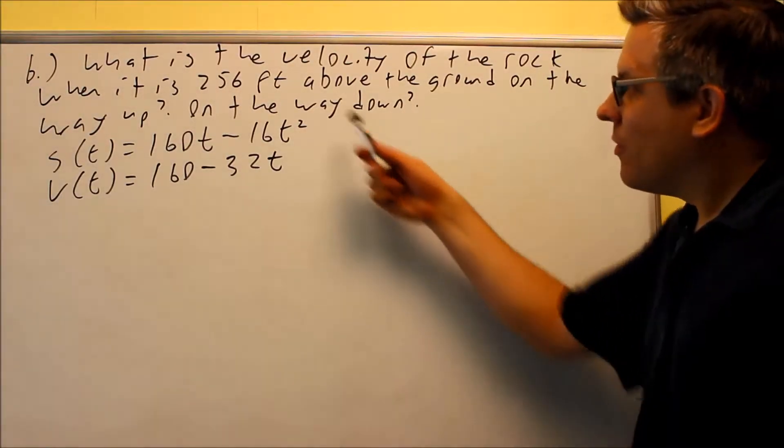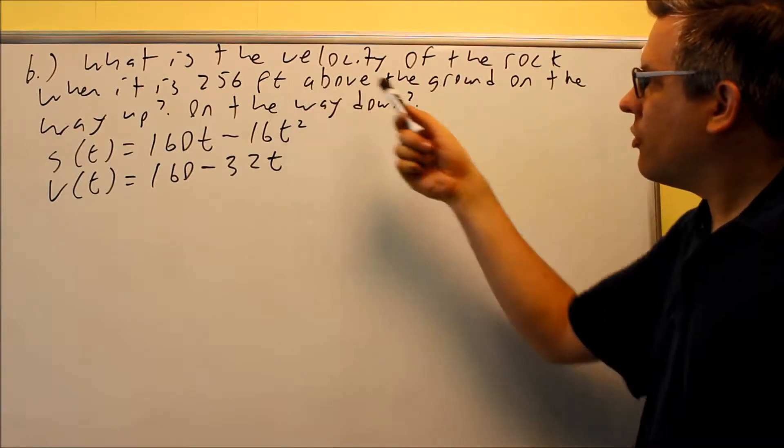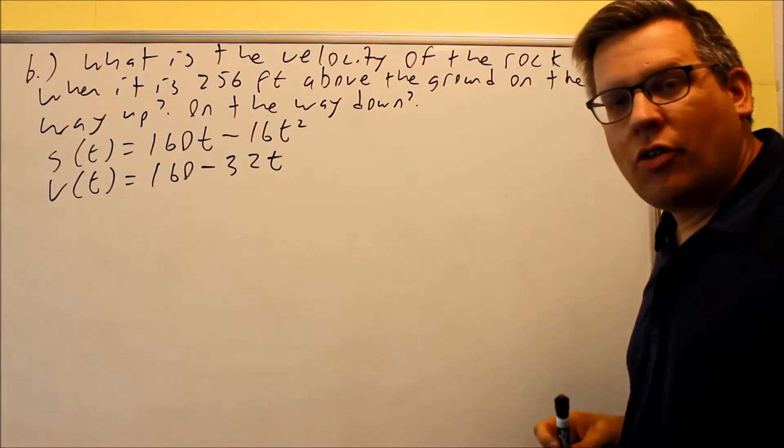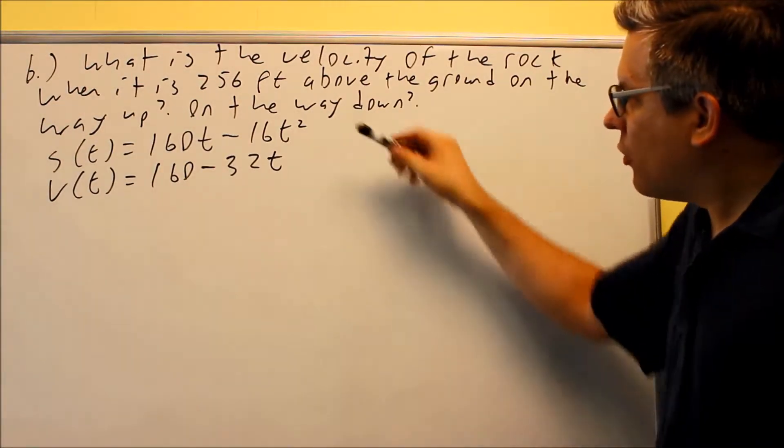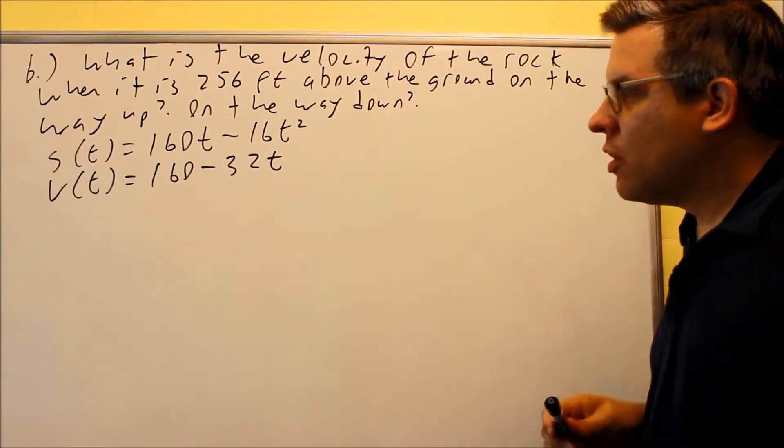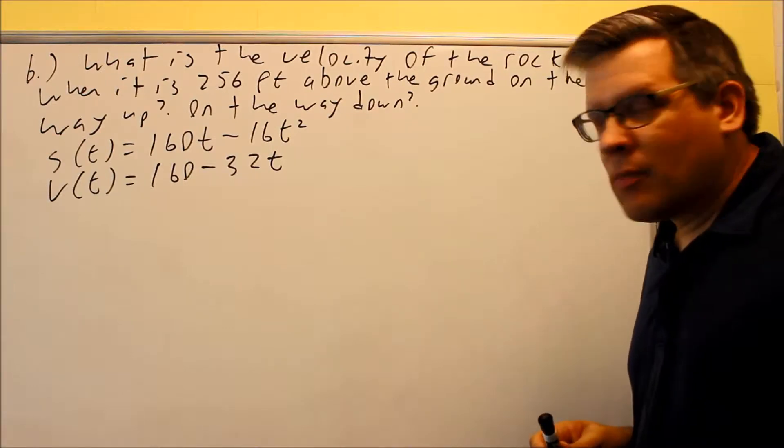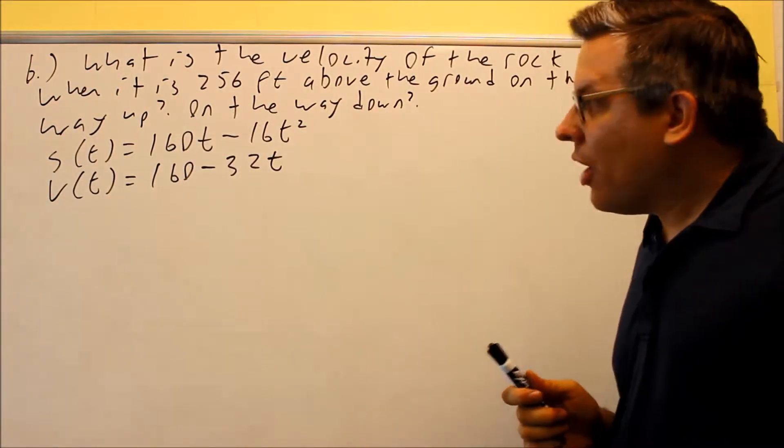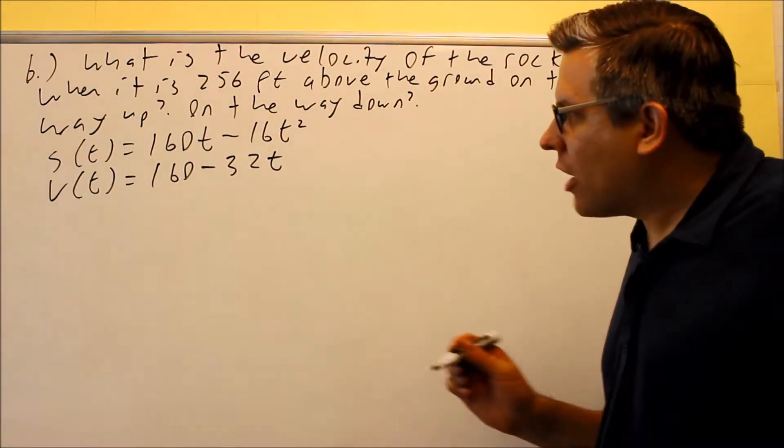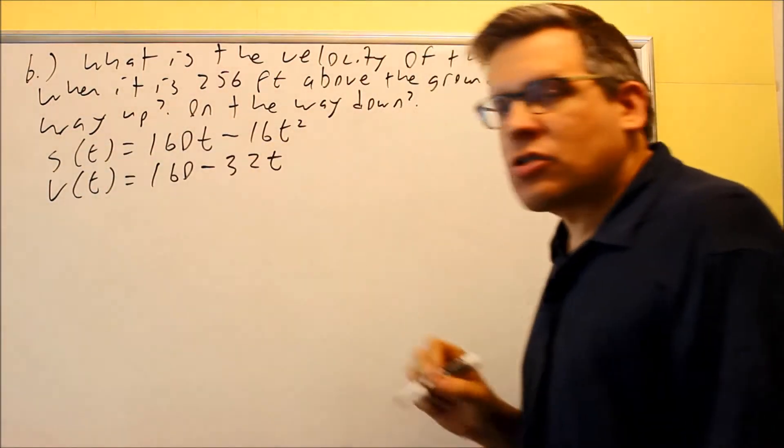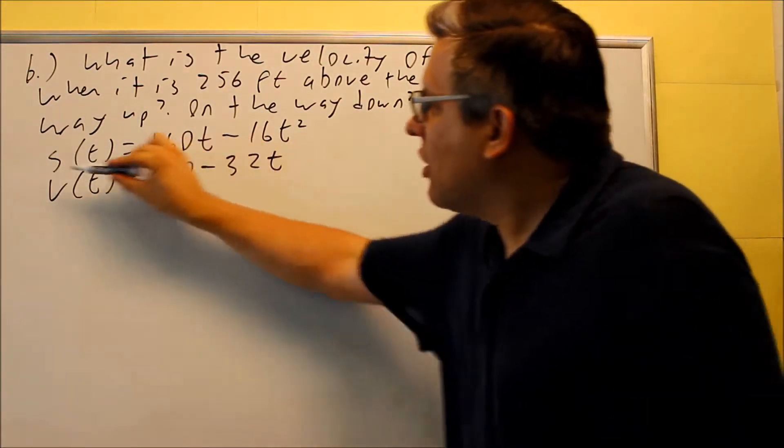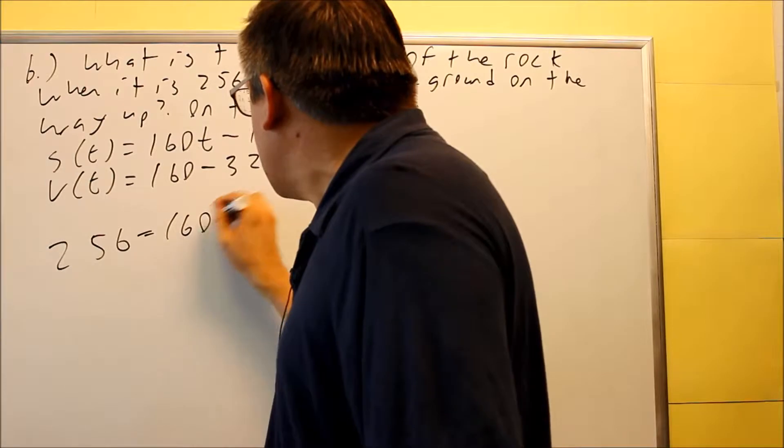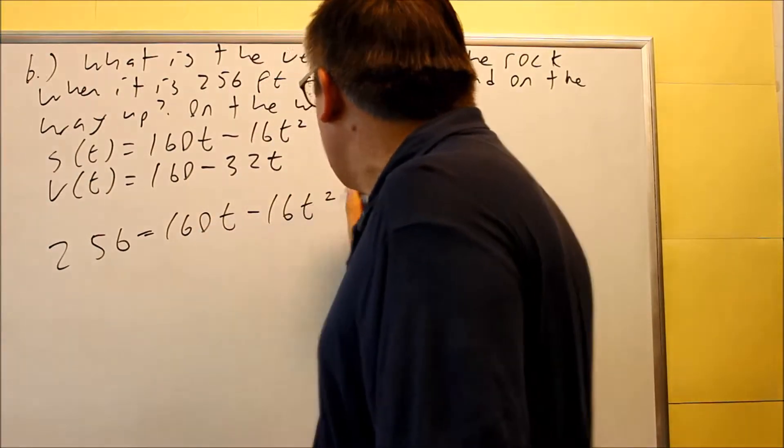For part b, what is the velocity of the rock when it's 256 feet above the ground, on the way up and on the way down? Recall here are two formulas that we used. We had previously, this one was given to us, we found the velocity in part a. So what we have to do first is find out the time at which it reaches 256 feet. We can do that by using the first function and we're going to put 256 in the left hand side.